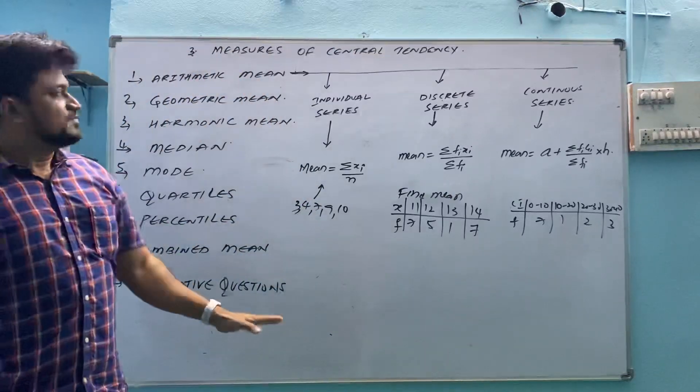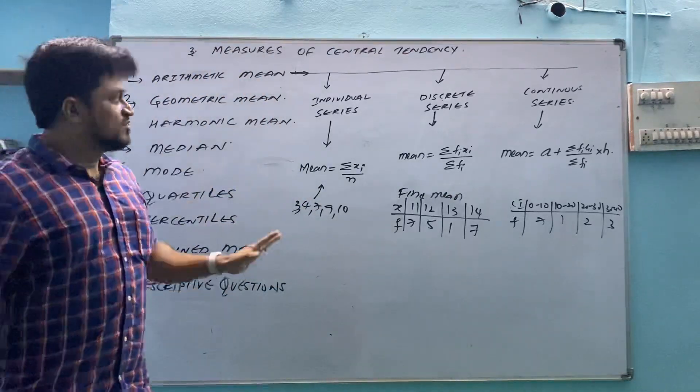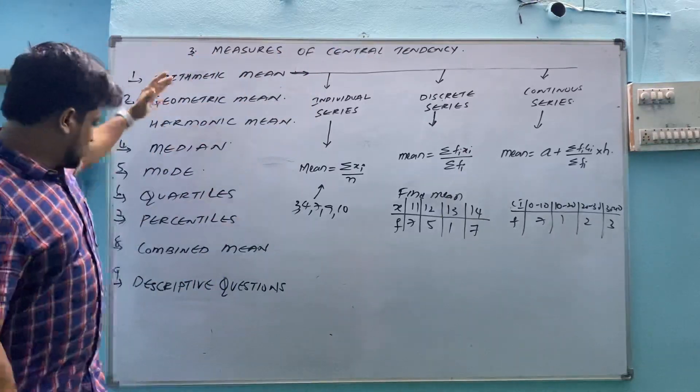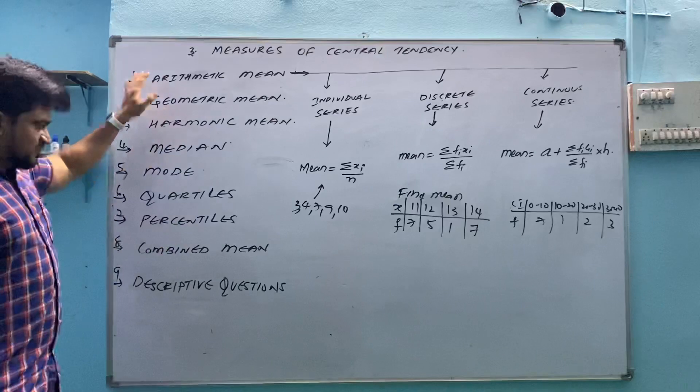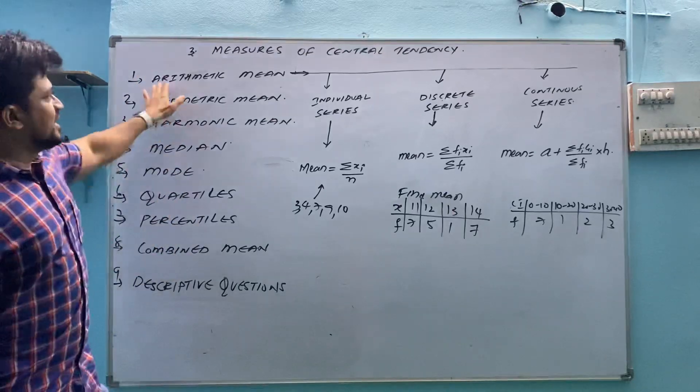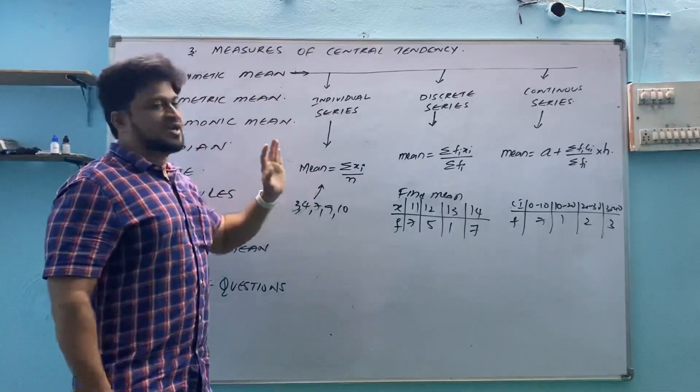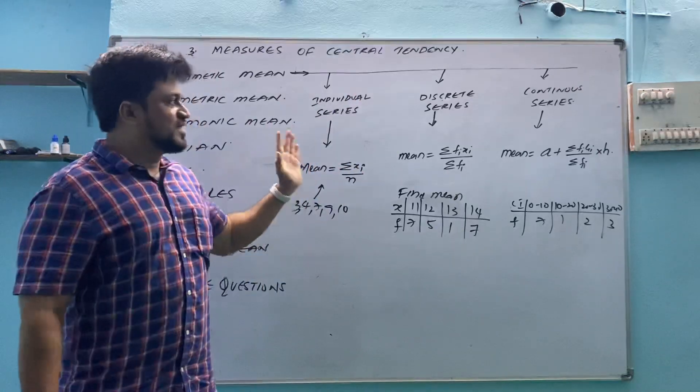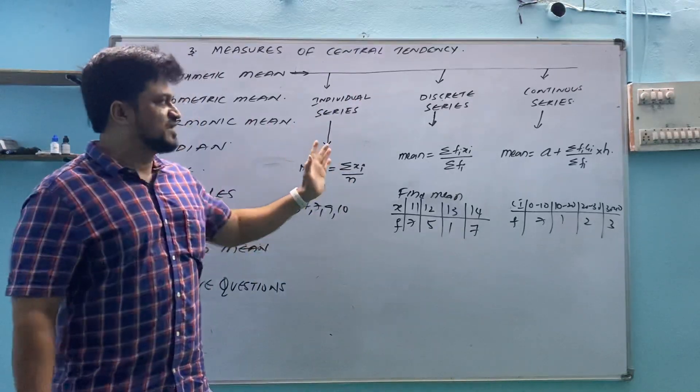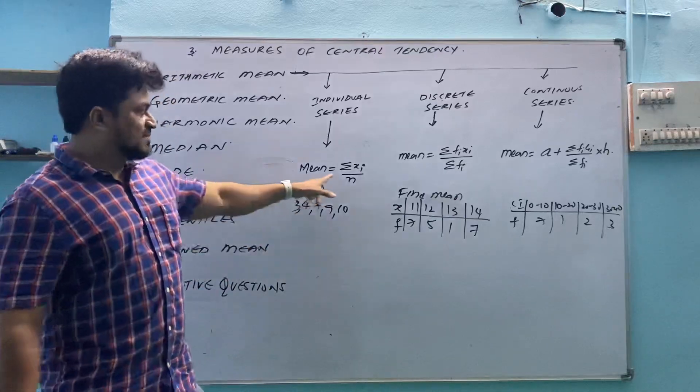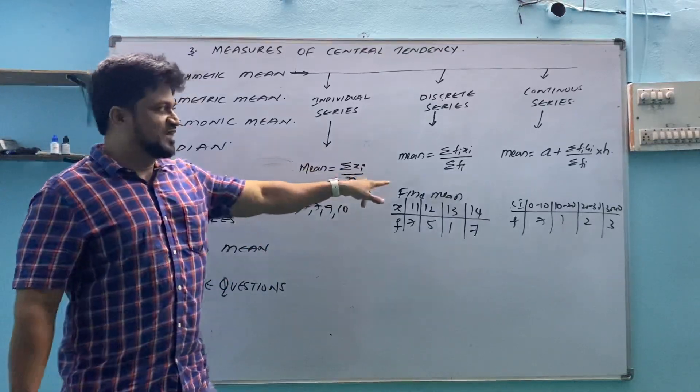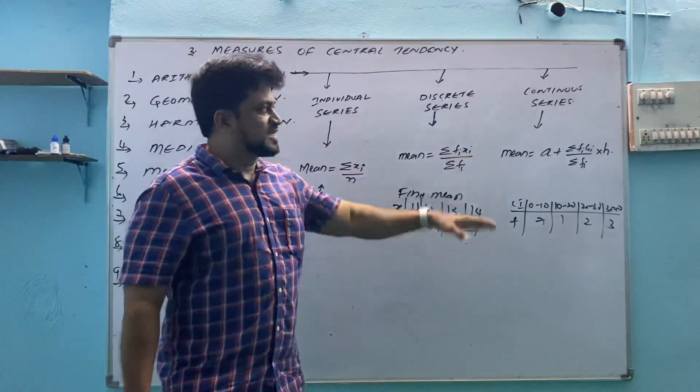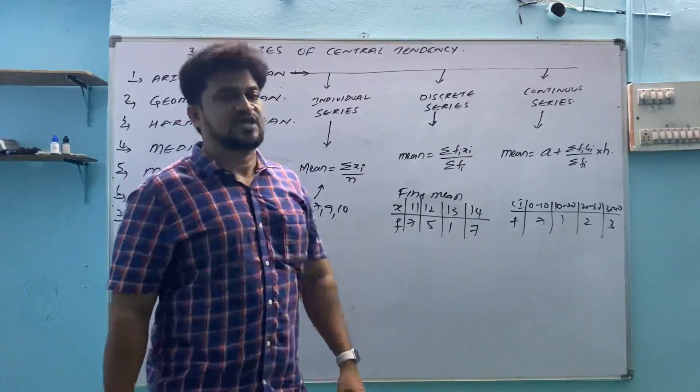So basically, what you have to learn at the end of this day? Measures of central tendencies have total nine types of questions. You have to go through with all things. Then in arithmetic mean or mean or x bar, we have three types of series. For all the different types of series, we have three different types of formulas: sigma xi by n, sigma fi xi by sigma fi, then mean equals to a plus sigma fi ui by sigma fi into h.